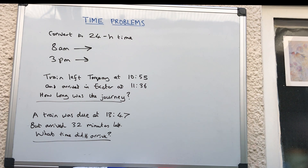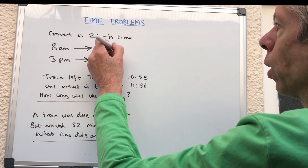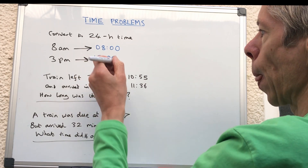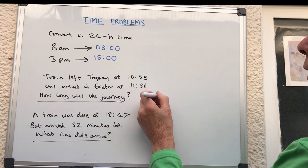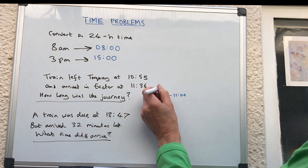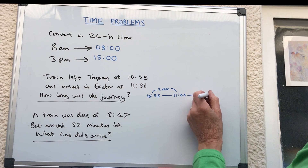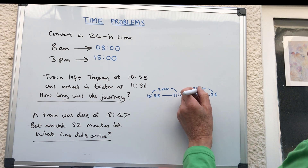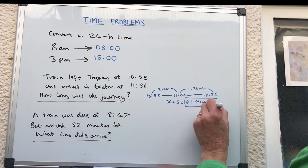Welcome back. For 8 a.m.: it's in the morning so we don't add anything, but we write it as 0800. For 3 p.m.: we add 12, so 3 plus 12 is 15, giving 1500. For the train journey from 10:55 to 11:36: from 10:55 to 11:00 is 5 minutes, then from 11:00 to 11:36 is 36 minutes. Adding them together: 36 plus 5 equals 41 minutes.